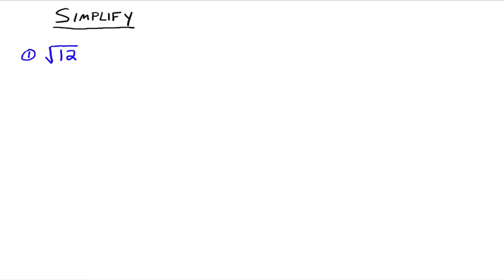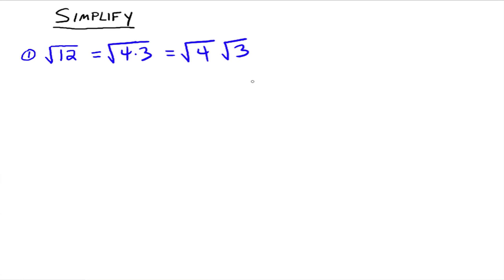Here's an example: the square root of 12. To simplify, we look for perfect squares that divide into 12. The largest perfect square that divides evenly into 12 is 4. So the square root of 12 can be rewritten as the square root of 4 times 3, which by our property becomes the square root of 4 times the square root of 3. The square root of 4 is 2, so this gives us 2 times the square root of 3. It meets all three criteria for a simplified radical expression.